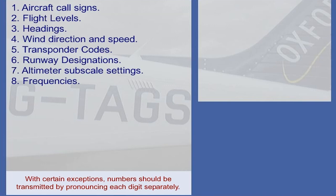With certain exceptions, numbers should be transmitted by pronouncing each digit separately. On screen now you see examples of the transmission of numbers for which this rule holds good. Numbers are transmitted separately for aircraft call signs and flight levels.